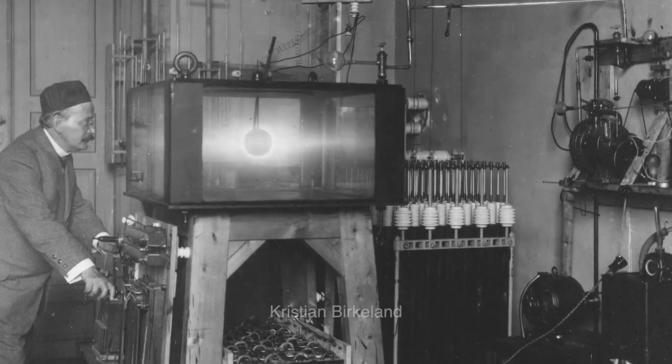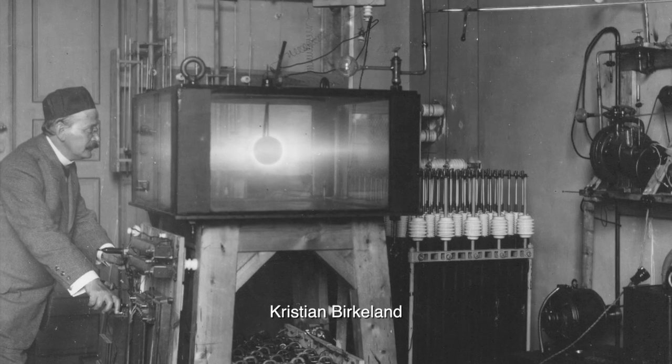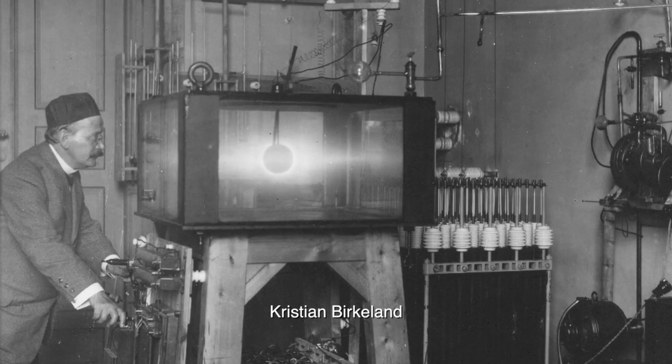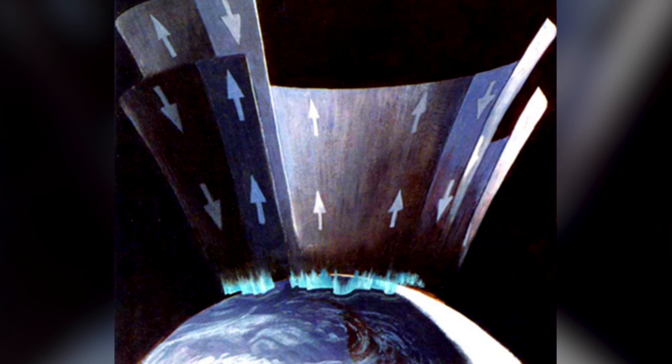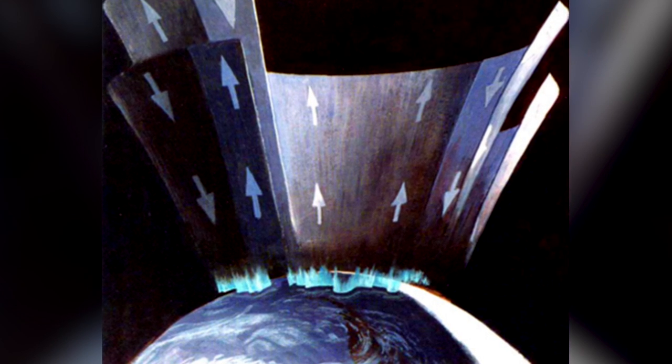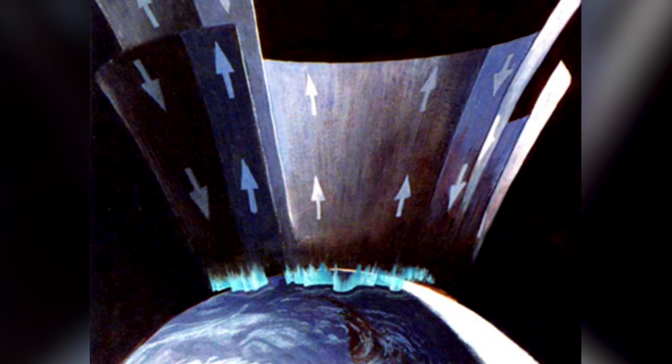On our own Earth, the Norwegian experimentalist Christian Birkeland postulated more than a century ago that electrical current systems produce Earth's auroras, a thesis confirmed many decades ago.